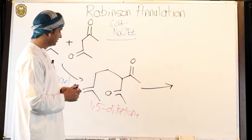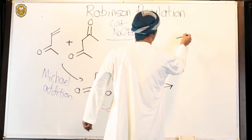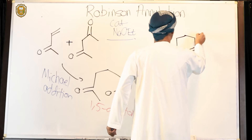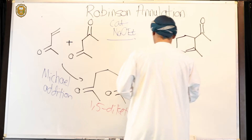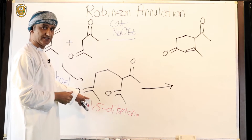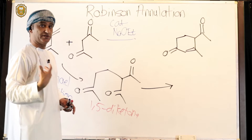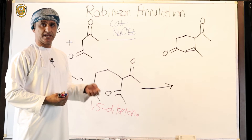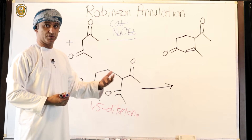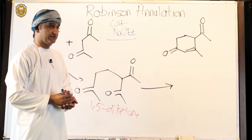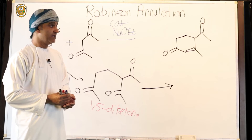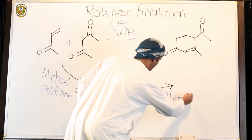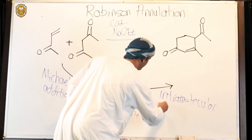So the aldol reaction takes place and eventually this product is obtained: the enolate attacks the other ketone in a nucleophilic addition — an aldol reaction — to give a beta-hydroxy carbonyl compound, which then gets protonated. That beta-hydroxy carbonyl compound then undergoes elimination reaction to give the corresponding alpha-beta unsaturated carbonyl compound. This is Michael addition followed by intramolecular aldol reaction.